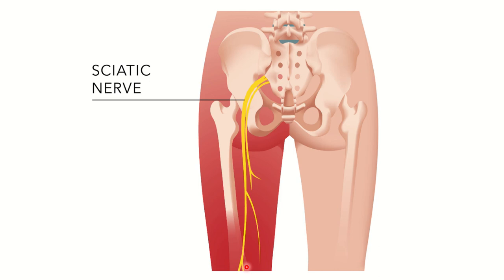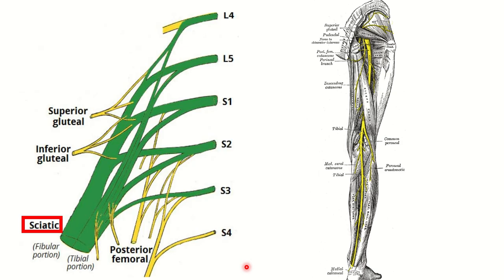It supplies the posterior part of the thigh and all parts of the leg and foot. In the second picture — the important picture — the sciatic nerve passes below the piriformis, goes to the posterior part of the thigh, then in the upper part of the popliteal fossa it divides into two branches: the tibial nerve, supplying the whole posterior part of the leg and part of the foot, and the common peroneal nerve, which curves around the fibular neck and supplies the anterior, lateral, and dorsal part of the leg and foot.